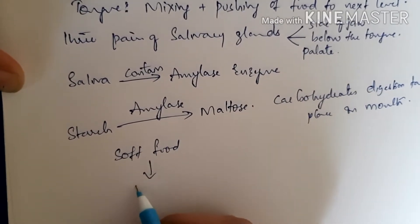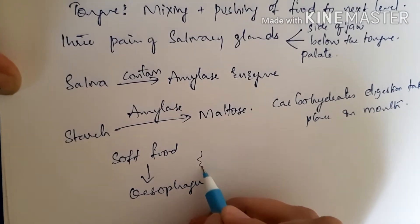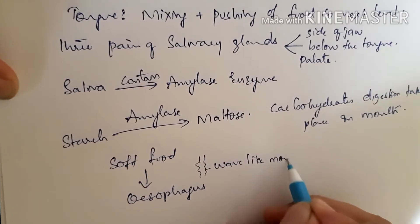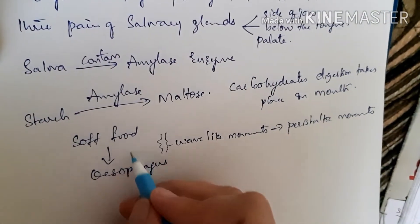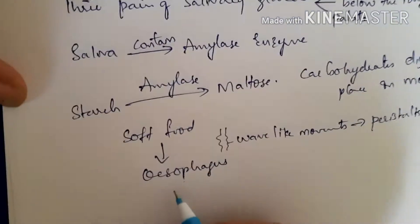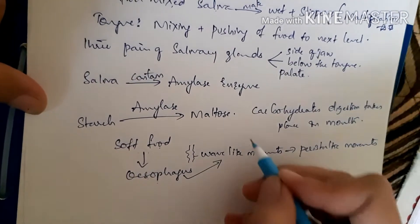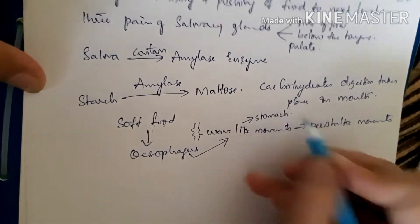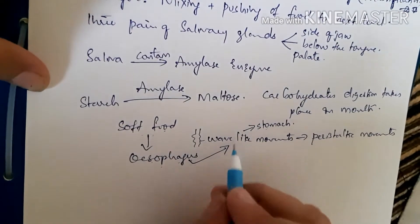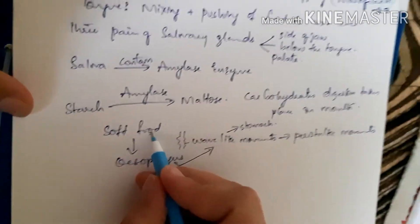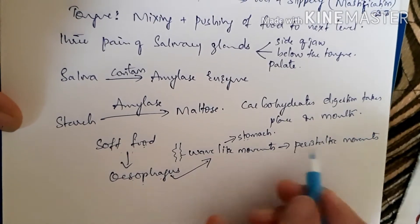The soft food, which is now slippery in nature, will enter the esophagus. The esophagus is a tube-like structure. Through wave-like movements called peristaltic movements, food travels from the mouth into the esophagus and then from the esophagus into the stomach.